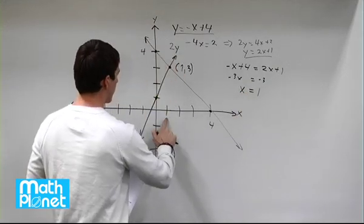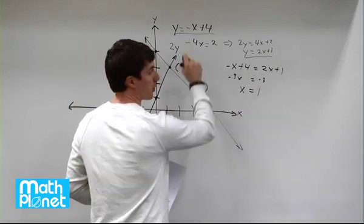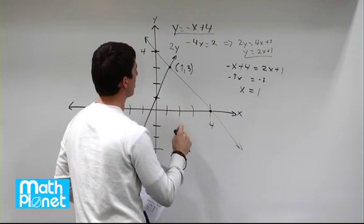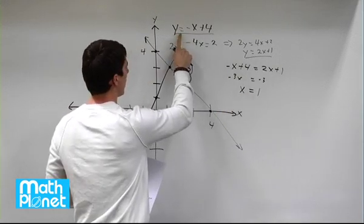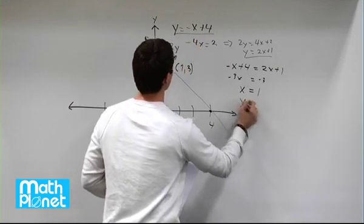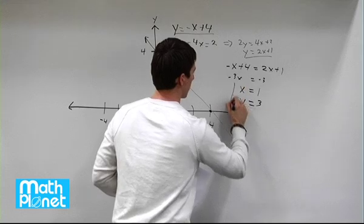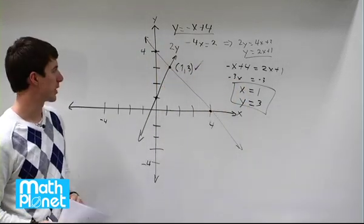So already that makes sense. We have x is 1 here. Now if we plug that into either one of these equations, we can see what the y value is going to be. If we plug in x is 1 to this one, we see we have y equals negative 1 plus 4. So y equals 4 minus 1, which is 3. So great. This does make sense. It works out after all. This is our solution 1 comma 3.